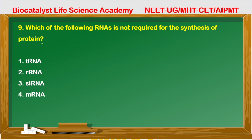Question 9: Which of the following RNA is not required for the synthesis of protein — that is, in translation? tRNA is required to bring amino acids. rRNA is required for ribosomal assembly. mRNA serves as a template. So the RNA not required is hnRNA — it is not needed for translation.